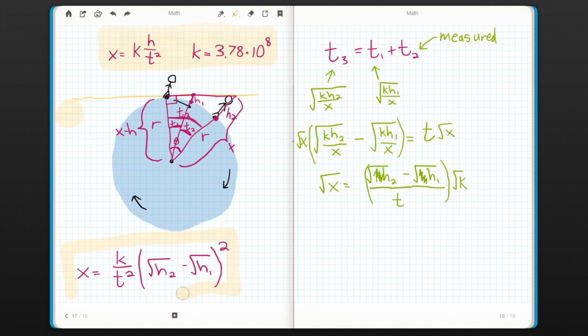I know it took a while, but now we finally have an equation that relates the radius of the earth to the time between two arbitrary height sunsets. Now let's do the actual measurement.